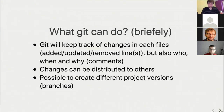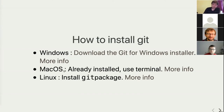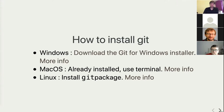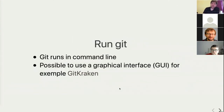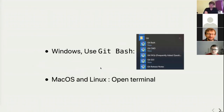To use git, first you need to install it. On Windows, there is a link you can click to download it. On macOS it's already installed, so you have nothing to do. On Linux you need to install the git package for your distribution. I will show you how to use it in command lines. You can also use a graphical interface like GitKraken, which is free, but I like the command line because you can really see how it works and understand the process. Once you're confident, you can switch to the graphical interface.